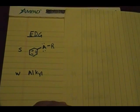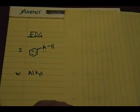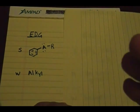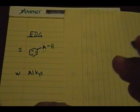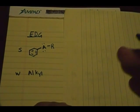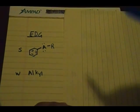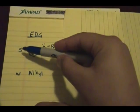Welcome back everybody to part three of electrophilic aromatic substitutions. As I said in part two, I'll be discussing electron donating groups and electron withdrawing groups. Let's start off with electron donating groups. S stands for strong, W stands for weak.